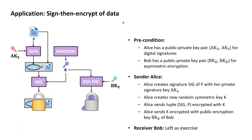Wrapping this Essentials of Cryptography chapter up is best done by looking at an application of both encryption and digital signatures in an approach known as sign-then-encrypt. This may look complex and intimidating, but the motivation to understand it is that at the end of this course we will have built from scratch an X.509 PKI that can be used to secure the exchange of emails. At the core of securing emails, from a cryptographic point of view, is this sign-then-encrypt approach, so this concept is very much worth discussing and understanding.